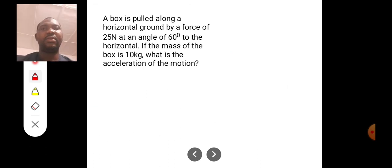Look at this again. A box pulled along a horizontal ground by a force of 25 N at an angle of 60 degrees to the horizontal. If the mass of the box is 10 kilograms, what is the acceleration of the motion?